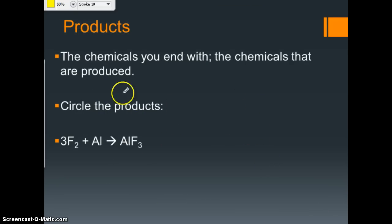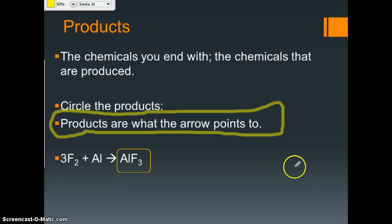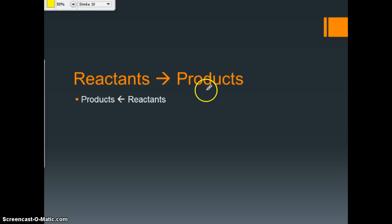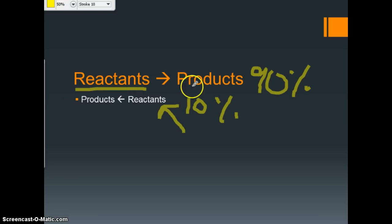Products — the chemicals you end with, the chemicals that are produced. Product, produced — yes, another very important vocabulary word, write it down. Circle the products. Products are what the arrow points to — write that down too. In this case, it's the aluminum fluoride. The arrow is pronounced yields, yield as in makes. So reactants yield products, or products are yielded from reactants. The arrow points to the products, and that's what's produced.